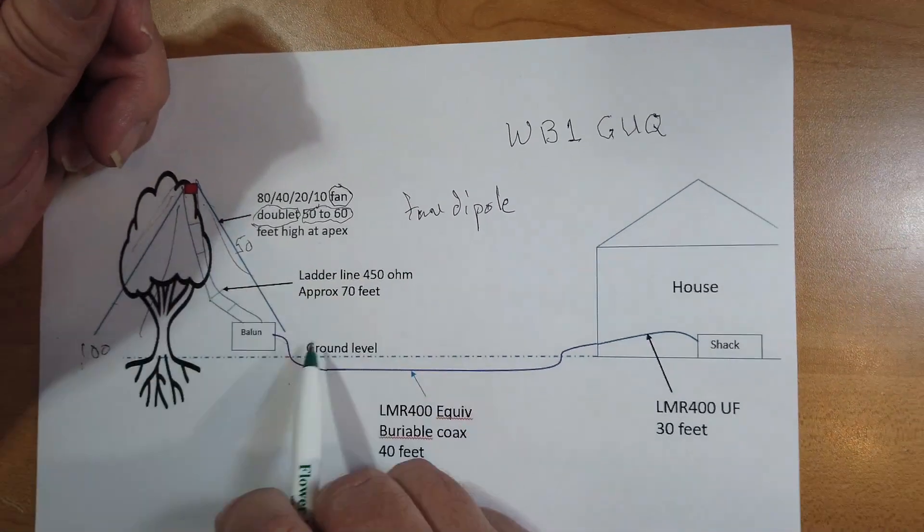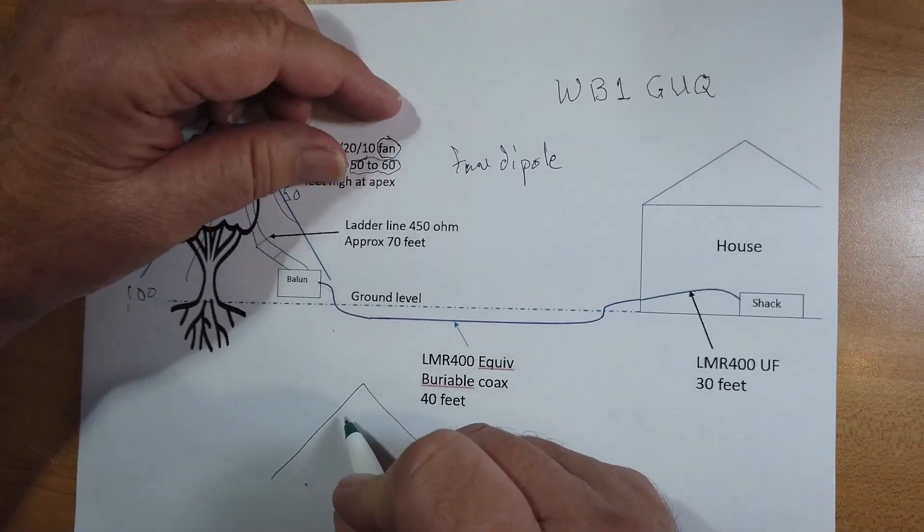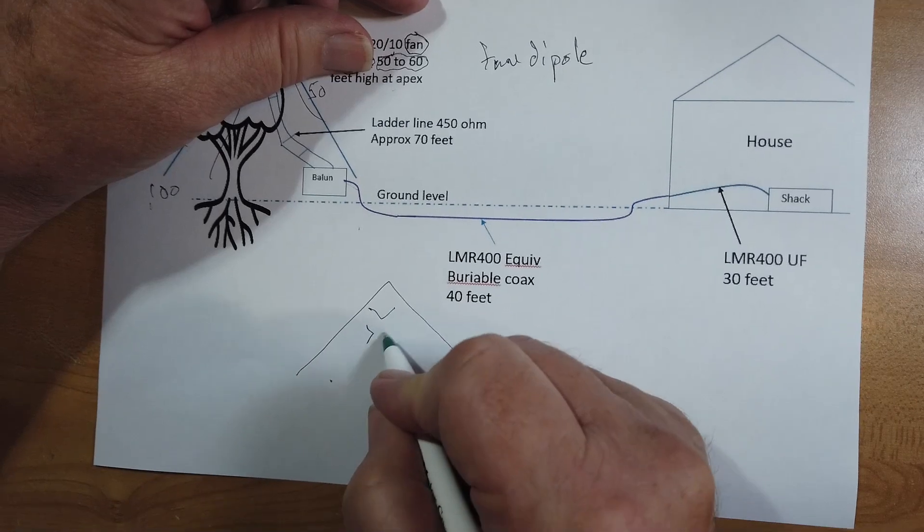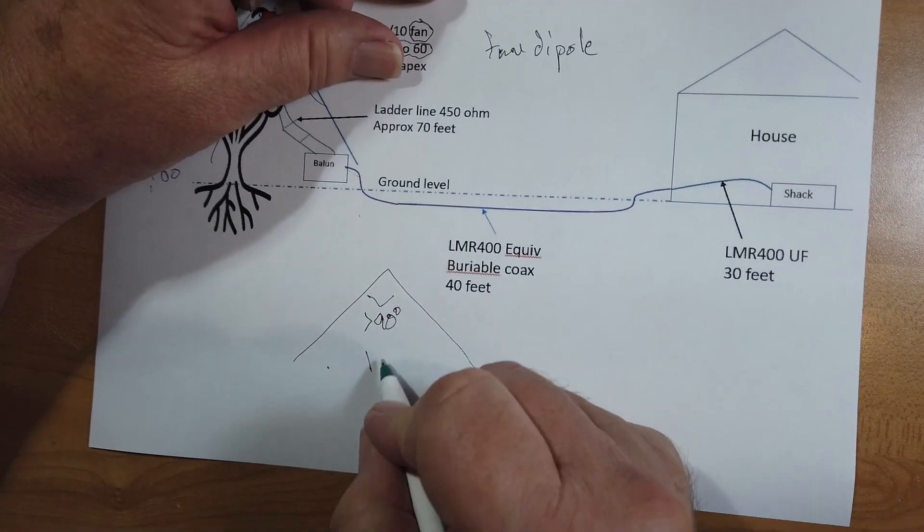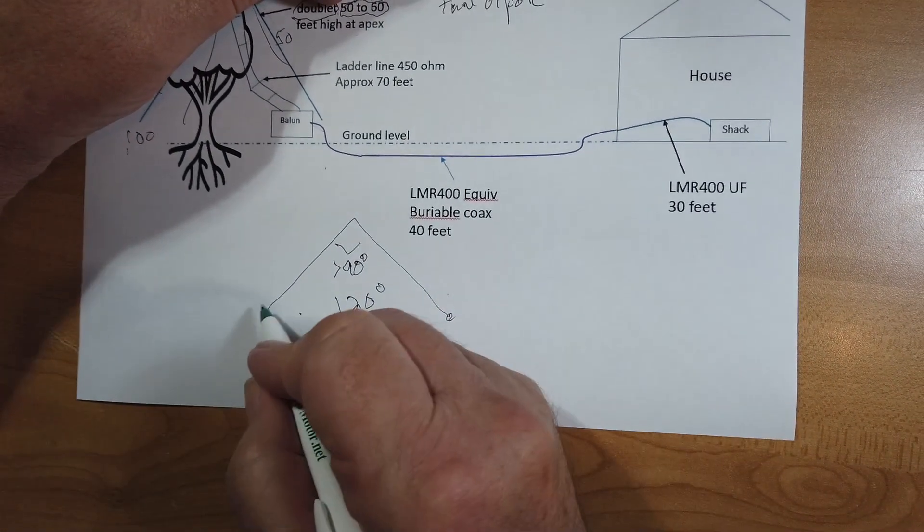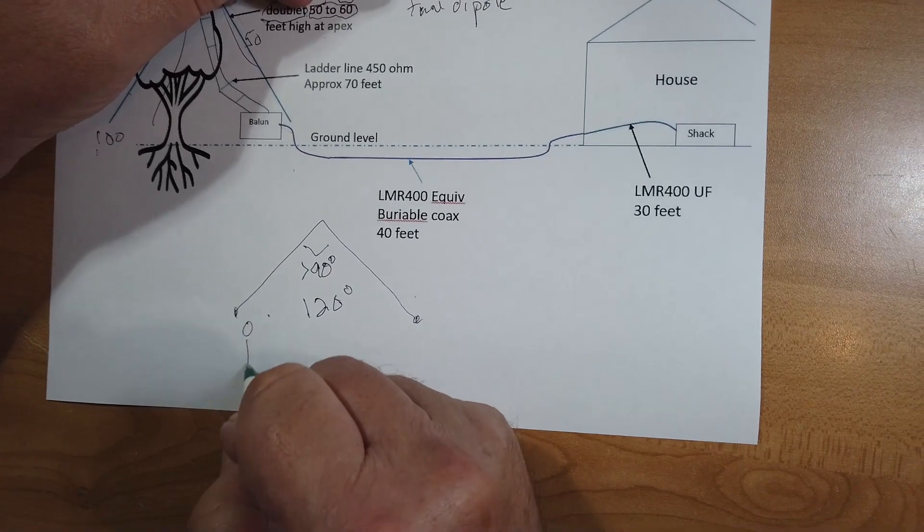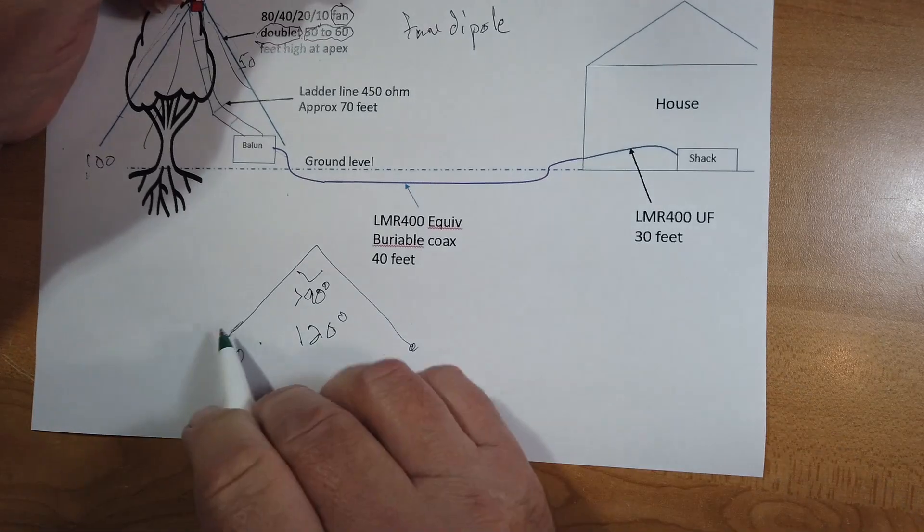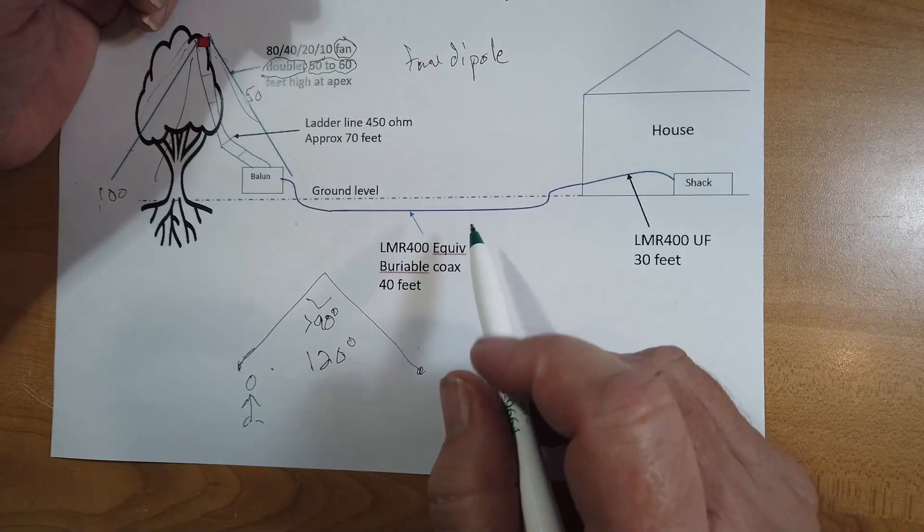Now, when you put this inverted V up here, one thing about the inverted V is you want this angle to be greater than 90 degrees. A good angle is 120 degrees. Furthermore, you want to keep these ends up off the ground, so a human being walking through the area doesn't garotte themselves on the thing. So that would be in other trees or something like that.